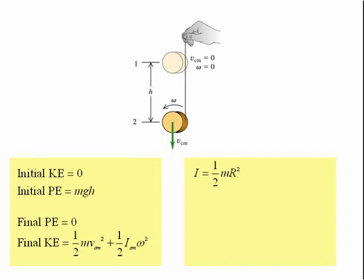Since there is no slipping, omega squared is equal to the velocity of the center of mass squared divided by r squared, the radius of the yoyo squared.